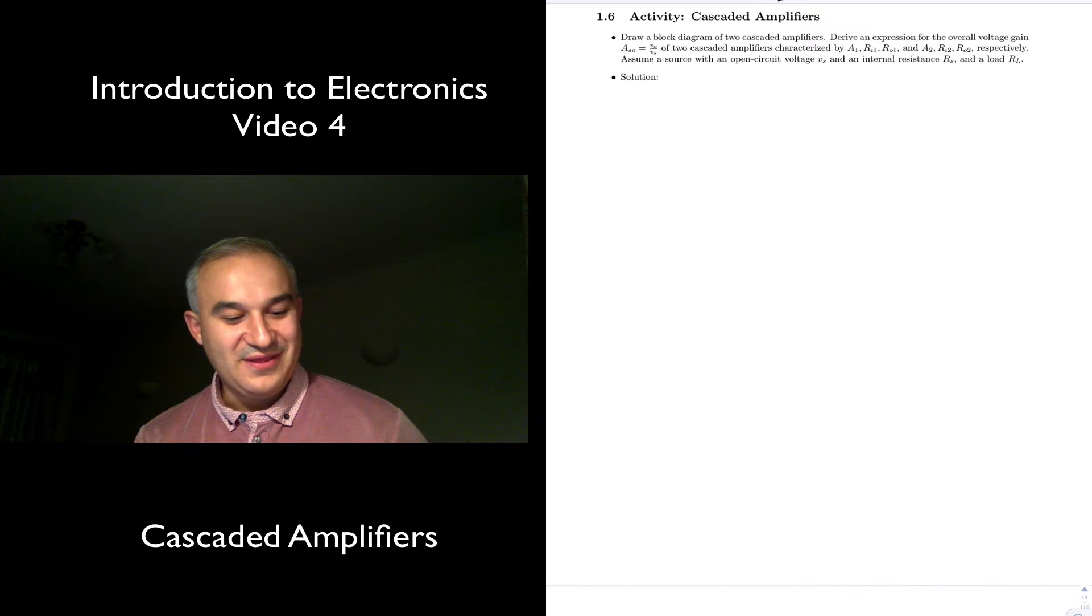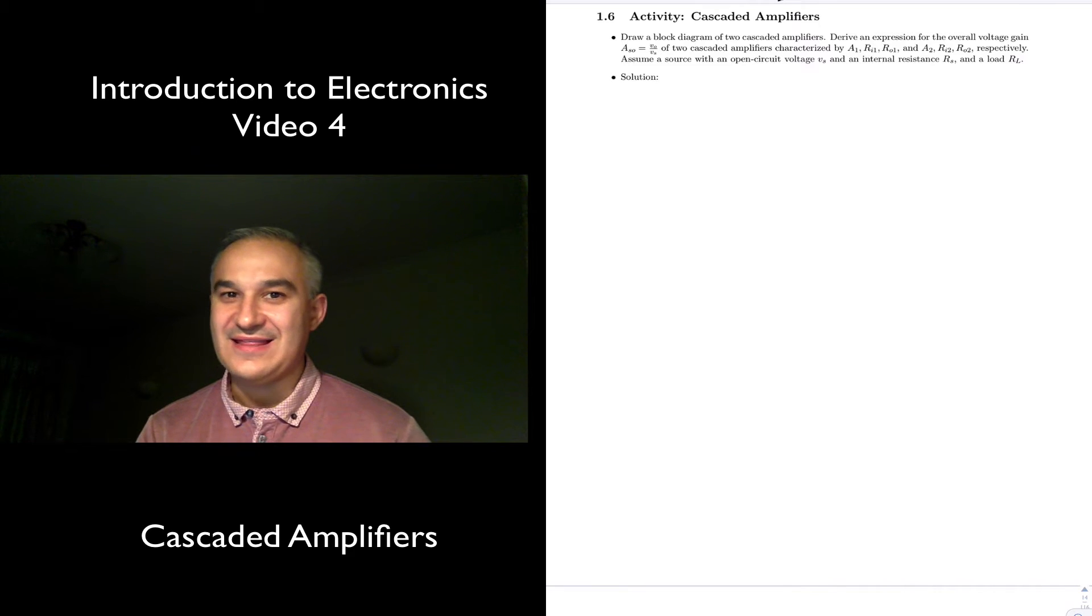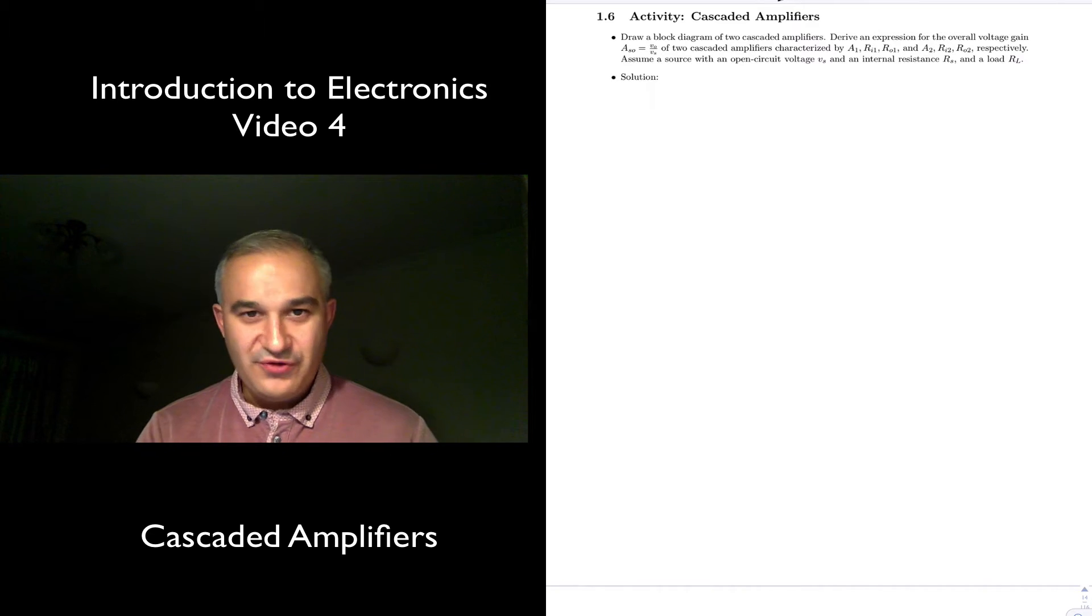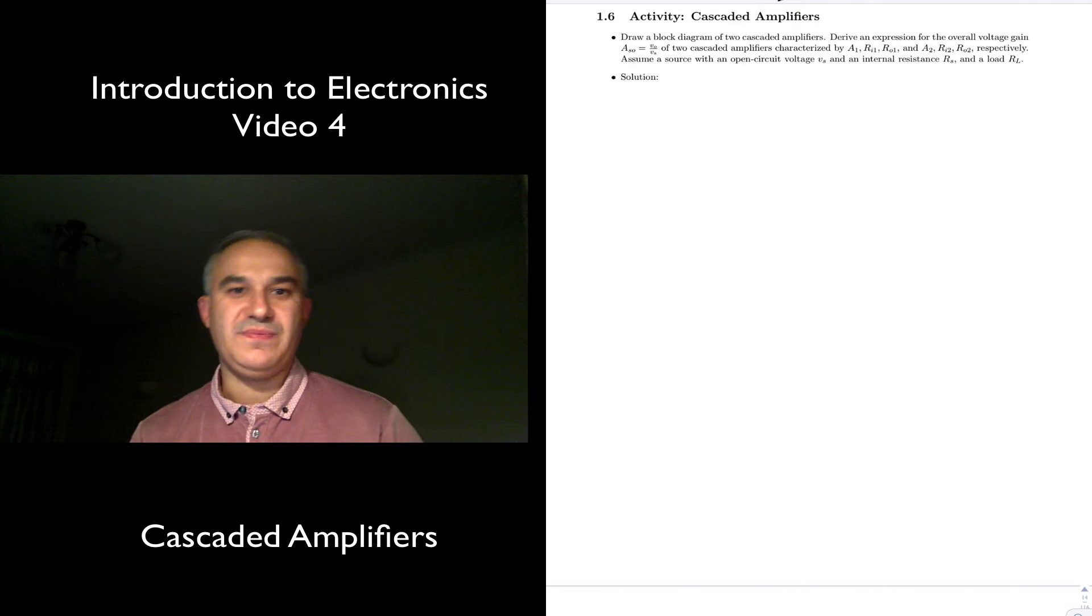Hello, we are now with activity 1.6, which deals with cascaded amplifiers. We are connecting amplifiers together. The activity asks: draw a block diagram of two cascaded amplifiers and derive an expression for the overall voltage gain for these amplifiers characterized with internal input impedance, output impedances, and gains. There is a practical example in the homework.